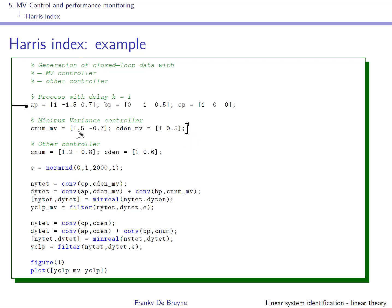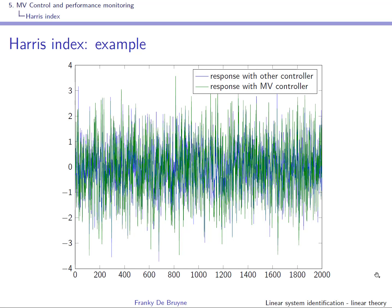We simulate this using the earlier example. We had computed the minimum variance controller; here we take some other controller — clearly not the minimum variance controller. We generate a white noise sequence with the setpoint equal to zero, compute the output of the closed-loop process using the closed-loop transfer function, and compare: the minimum variance controller response and the other controller response. These are the two responses — in blue, the controller that is not minimum variance; in green, the minimum variance controller.